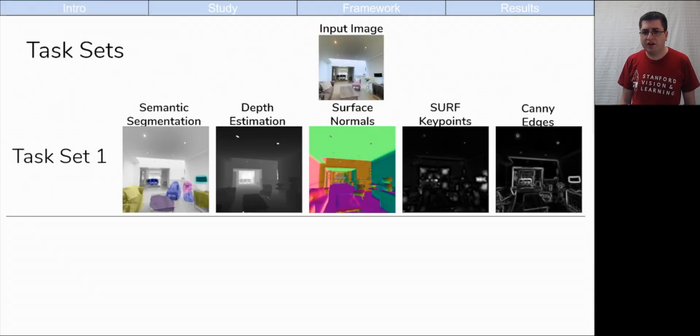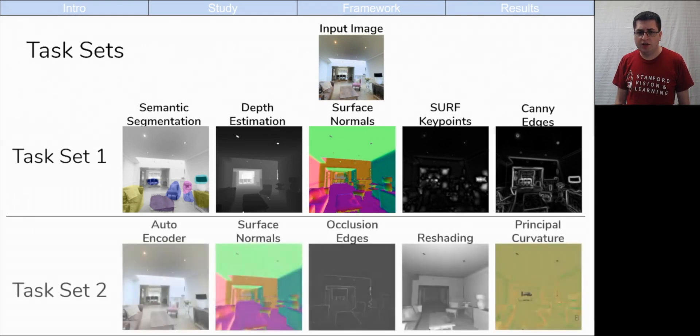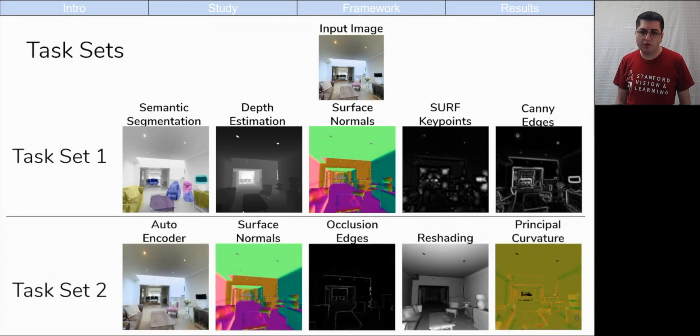From the Tasconomy data set, we have selected two sets of five tasks each. Task set 1 includes semantic segmentation, depth estimation, surface normals, key points, and edges. Task set 2 includes autoencoder, surface normals again, occlusion edges, reshading, and principal curvature.